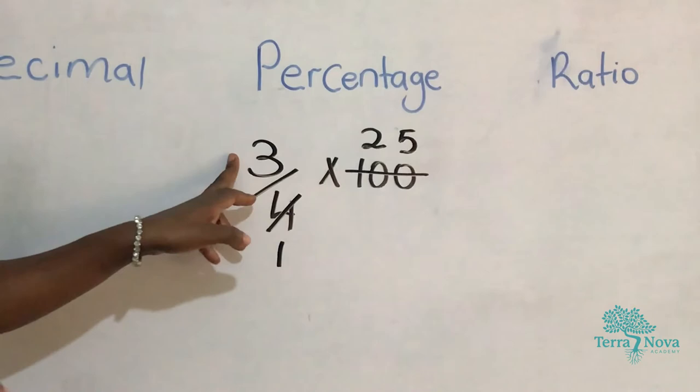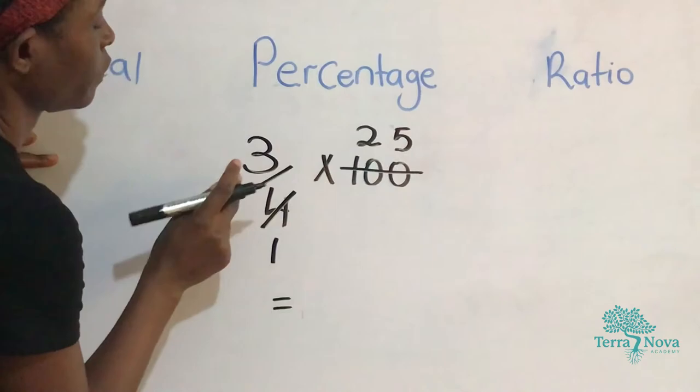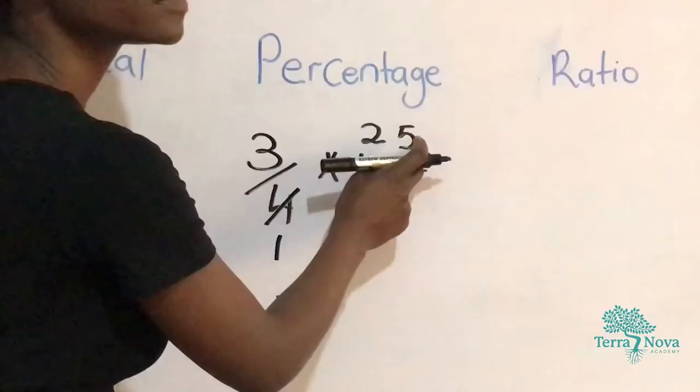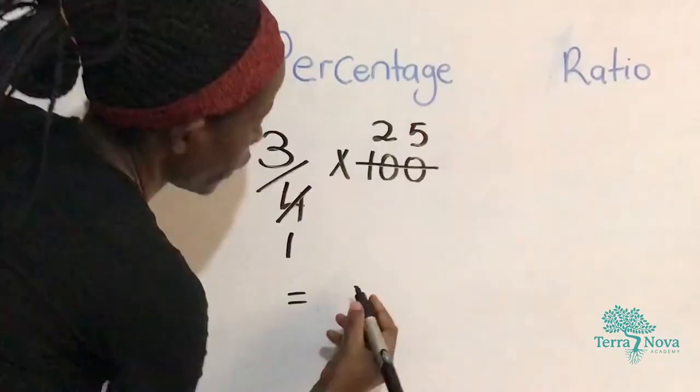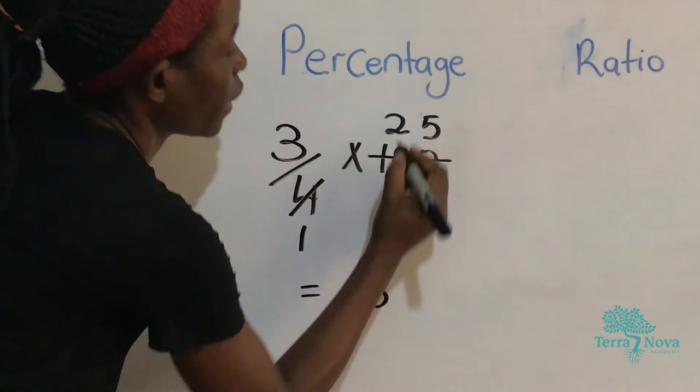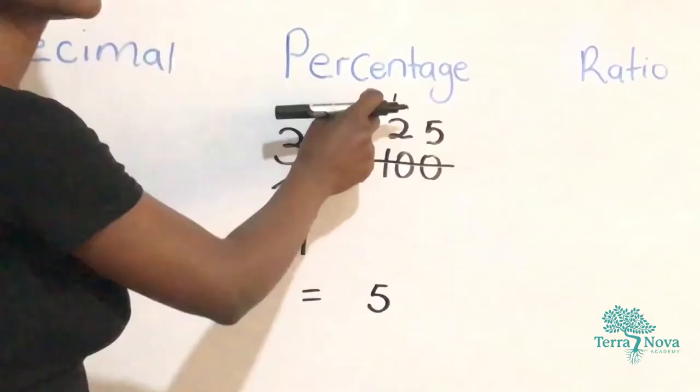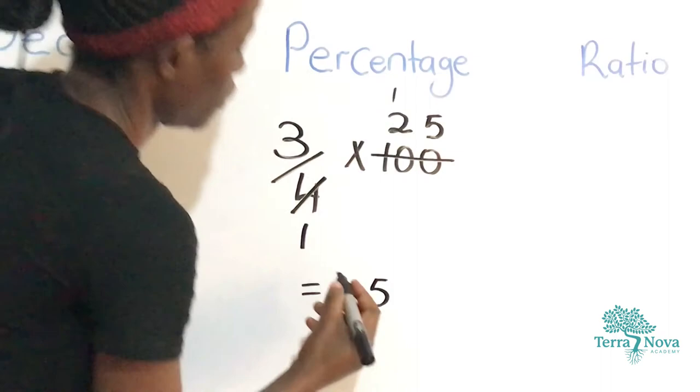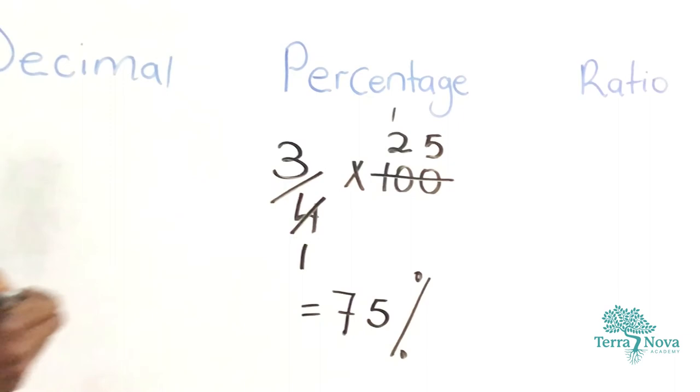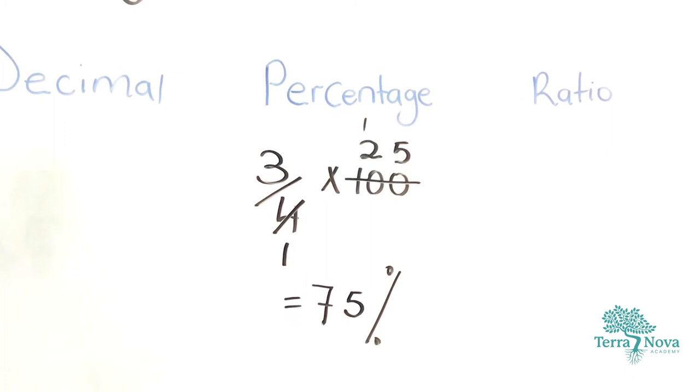So we are meant to multiply 3 times 25, which is going to be 3 times 5 is 15. We write our 5. We carry our 1. 3 times 2 is 6 plus 1, 7. So the answer is 75%. So 3 out of 4 is the same as 75%.